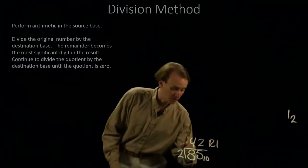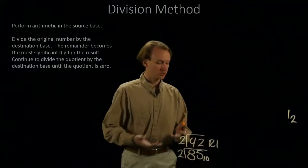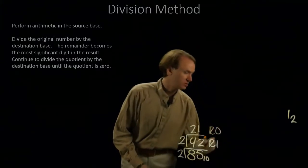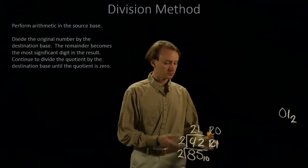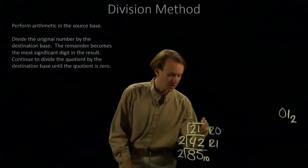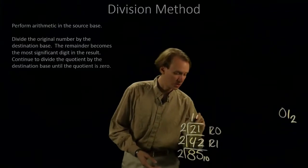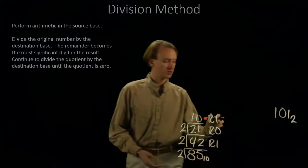Now, I'll go back over here and I'll divide by 2 again. 42 divided by 2 gives me 21, remainder 0. I'll copy down the 0. And I'll divide again. 21 divided by 2 gives me 10, remainder 1. And I'll copy down the remainder again.